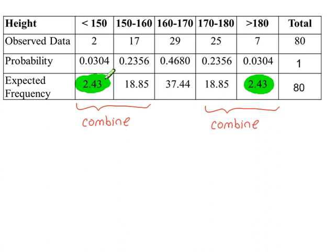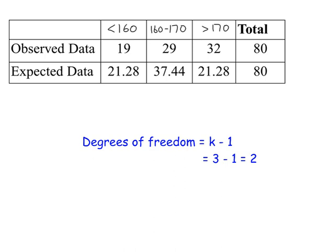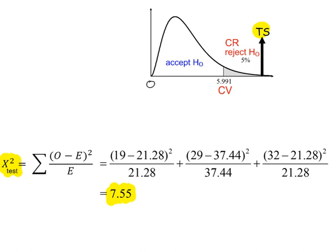Less than 5, less than 5, so combine. Our new table: two degrees of freedom. Our test statistic, 7.55, is greater than 5.991, reject H0.